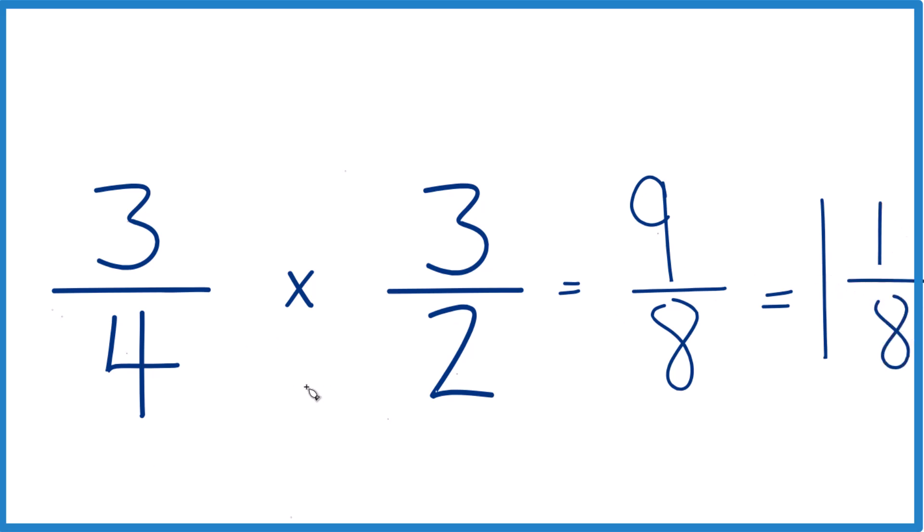So three-fourths divided by two-thirds, that gives you one and one-eighth, or the improper fraction, nine-eighths.